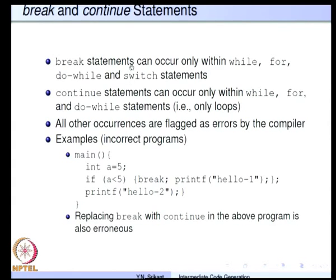A break statement takes the control away from a loop or switch statement, and it can occur only within the while, for, do-while, and switch statements. If it occurs in any other type of statement, it would be flagged as an error by the compiler. A continue statement simply skips the rest of the iteration of the loop and goes on to the next iteration, and continue statements are valid only within while, for, and do-while loops; others are flagged as errors by the compiler.